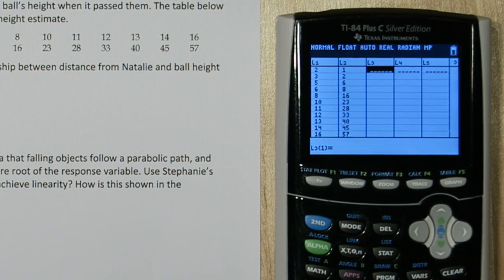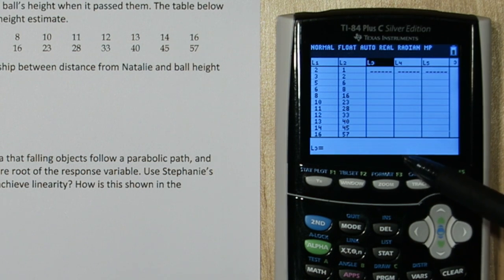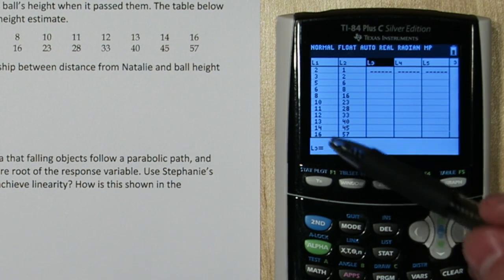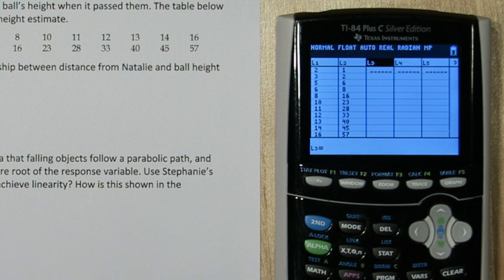So if you go over to list 3 and press up, this is our formula bar, and we're going to type in our least squares regression equation so it can predict the ball's height for each of these distances from Natalie.